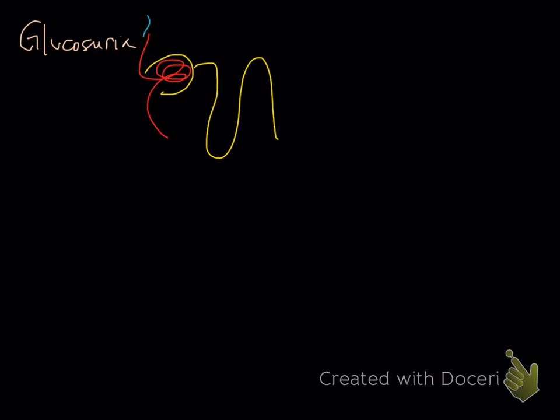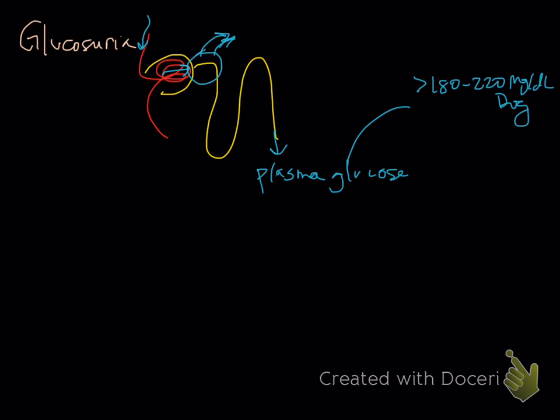Since glucose is a relatively small molecule, it passes through the glomerulus, and then it has to be reabsorbed in the proximal renal tubule. You can actually see glucose in the urine when you have a high plasma glucose. This means it's actually exceeding the renal threshold ability for it to be taken up. Those numbers would be greater than 180 to 220 mg/dL in the dog, and in the cat it's about 100 more than that, so 280 to 290 mg/dL.